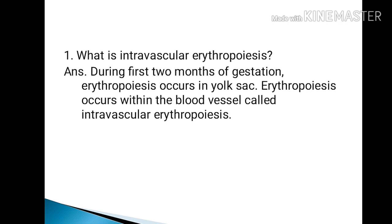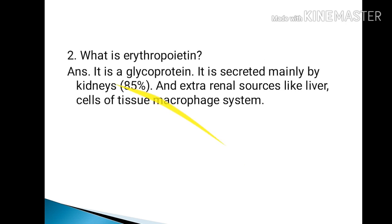Important points to remember: erythropoiesis during the first two months of gestation occurs in the yolk sac. Erythropoiesis occurring within the blood vessels is called intravascular erythropoiesis.